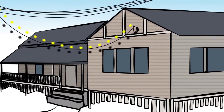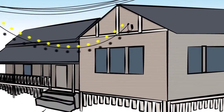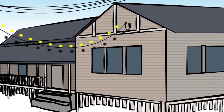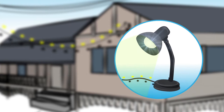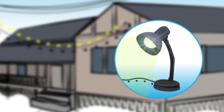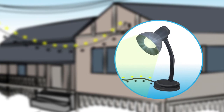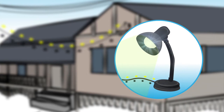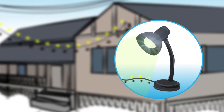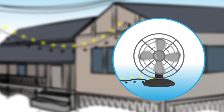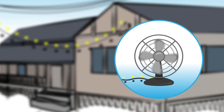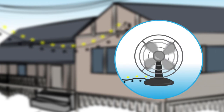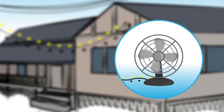In electricity, electrons travel in a circuit or loop. For an electrical appliance to work, the electricity needs to go in through wiring, do its job, then come out again and go back towards the power source.